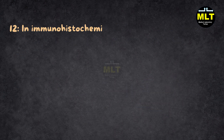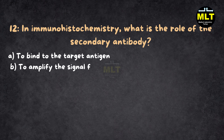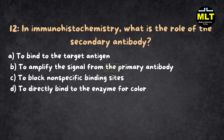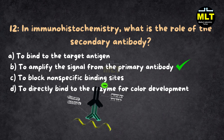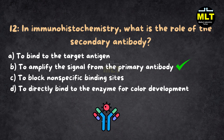Question 12: In immunohistochemistry, what is the role of the secondary antibody? Options: A. To bind to the target antigen, B. To amplify the signal from the primary antibody, C. To block nonspecific binding sites, D. To directly bind to the enzyme for color development. Correct answer: B. To amplify the signal from the primary antibody. Explanation: The secondary antibody is like the hype man for the primary antibody — it binds to the primary antibody and carries an enzyme or fluorochrome, amplifying the signal. It doesn't bind to the antigen directly, just makes the whole show shine brighter.